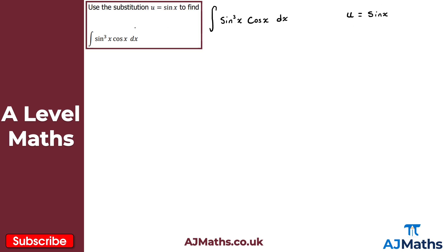Now we need to rewrite this integral using the substitution. sin³x — if u is sin x, that would be u³. The cos x is a little more problematic, so we'll come back to that. We also need a substitution for dx: differentiate u with respect to x, giving du/dx = cos x, since the derivative of sin x is cos x.